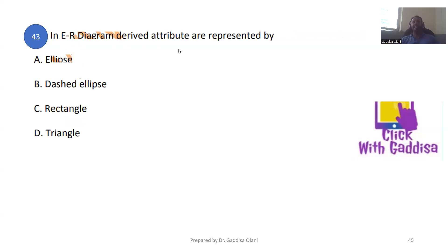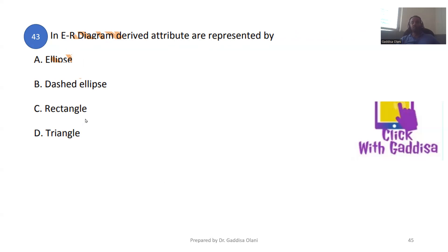The diagram shows derived attributes. The attributes in the ER diagram are represented by an ellipse. If it is a derived attribute, it will be a dashed ellipse. If you have a rectangle, it represents an entity.